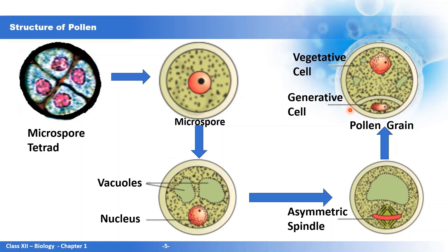The pollen grain has two wall layers: the outer wall is the exine and the inner wall is the intine. An interesting feature of the exine is that it is made up of sporopollenin, one of the most resistant organic materials known. It is resistant to acids, alkalis, enzymes, and high temperatures, and cannot be degraded — which is why it has been preserved as a fossil. In the exine there is also an aperture or opening known as a germ pore, which serves as an entry point for the pollen tube.